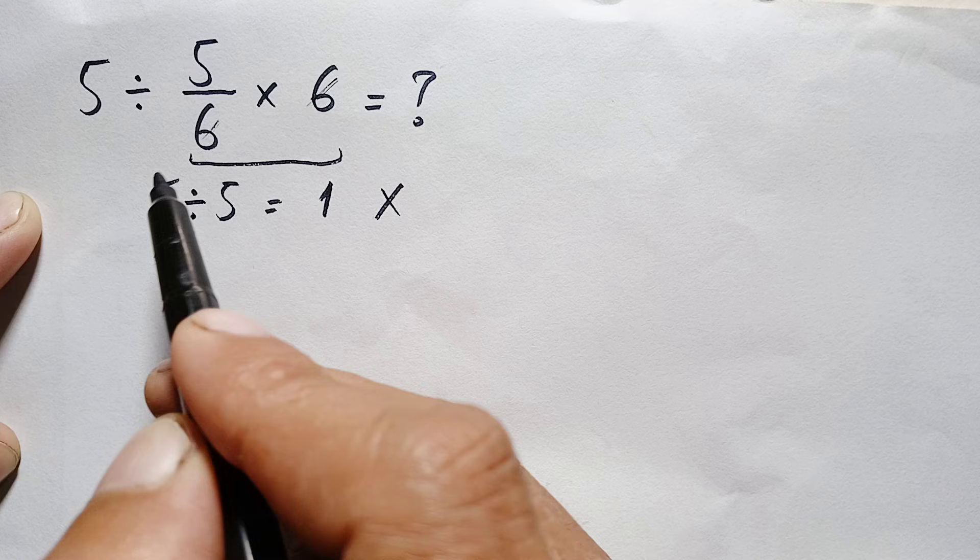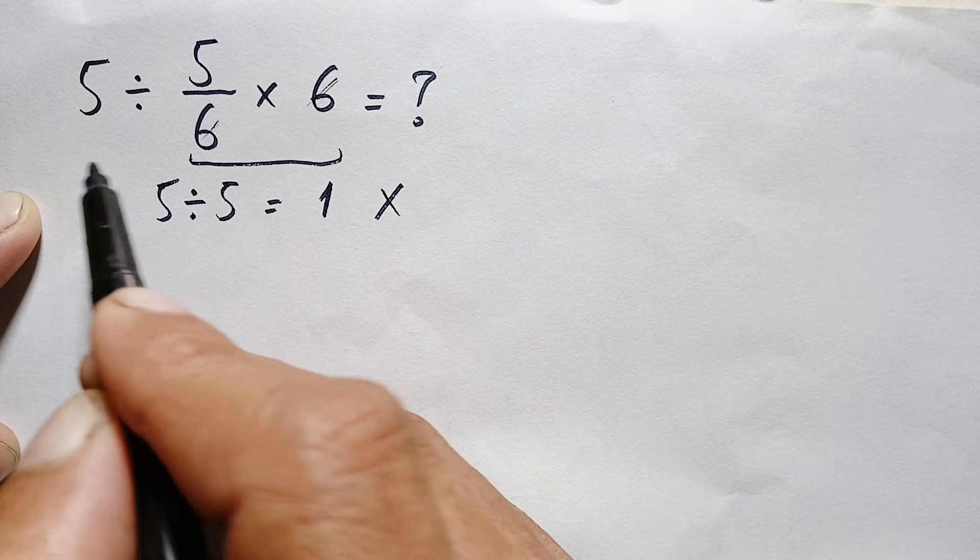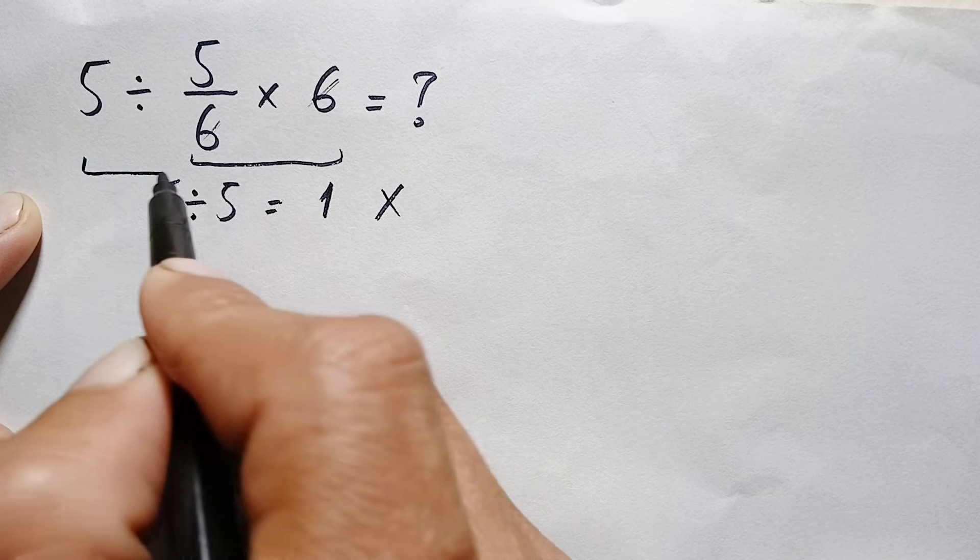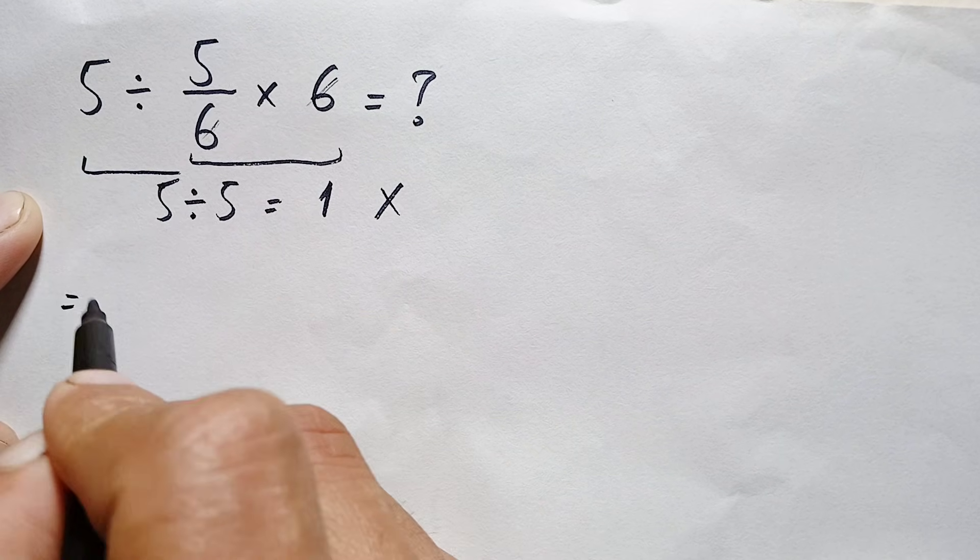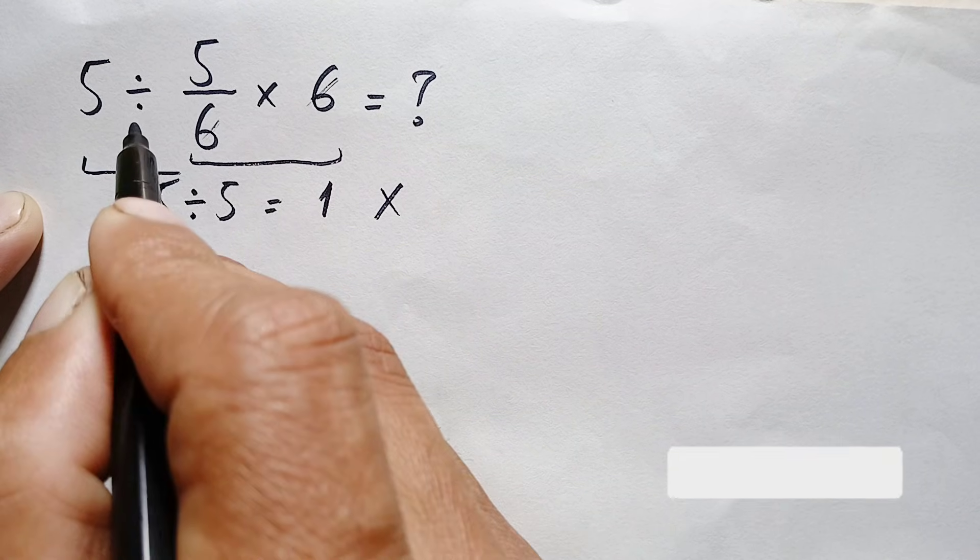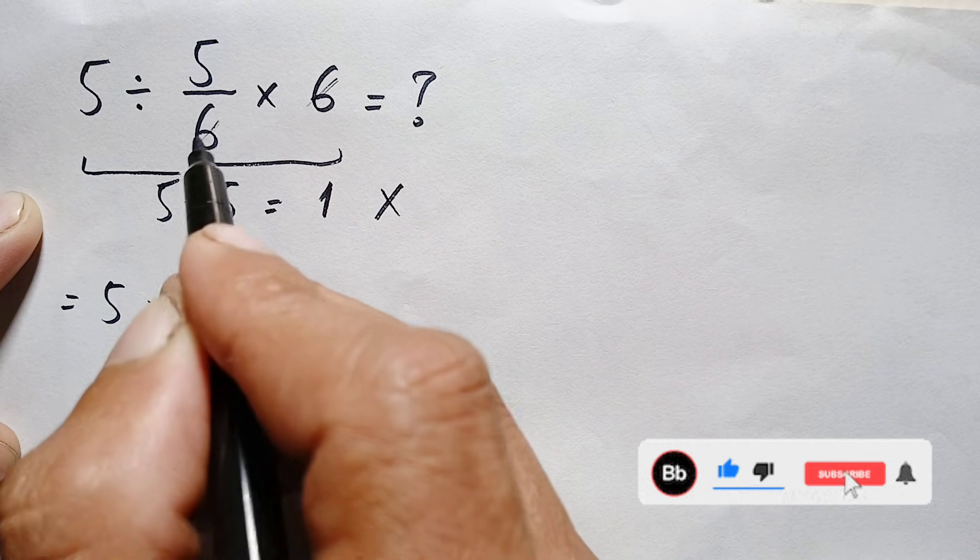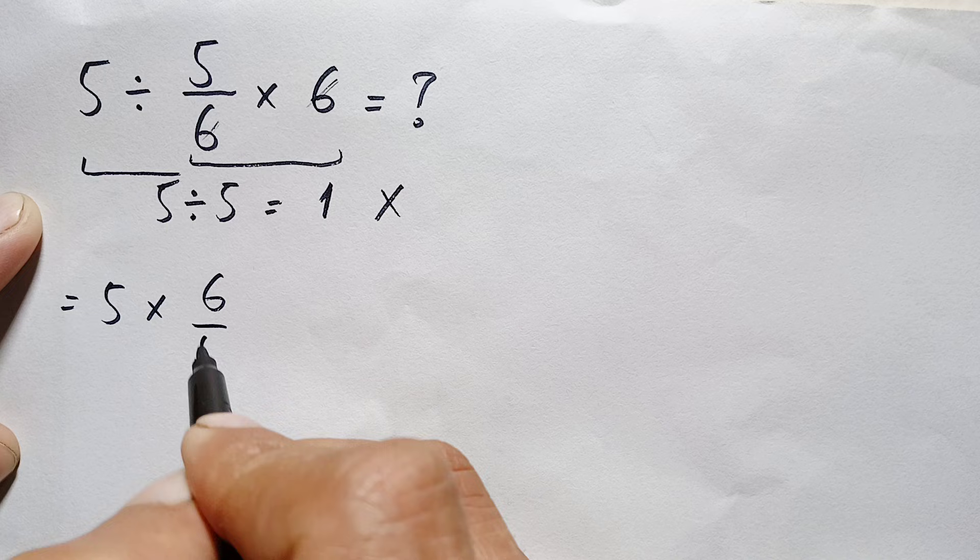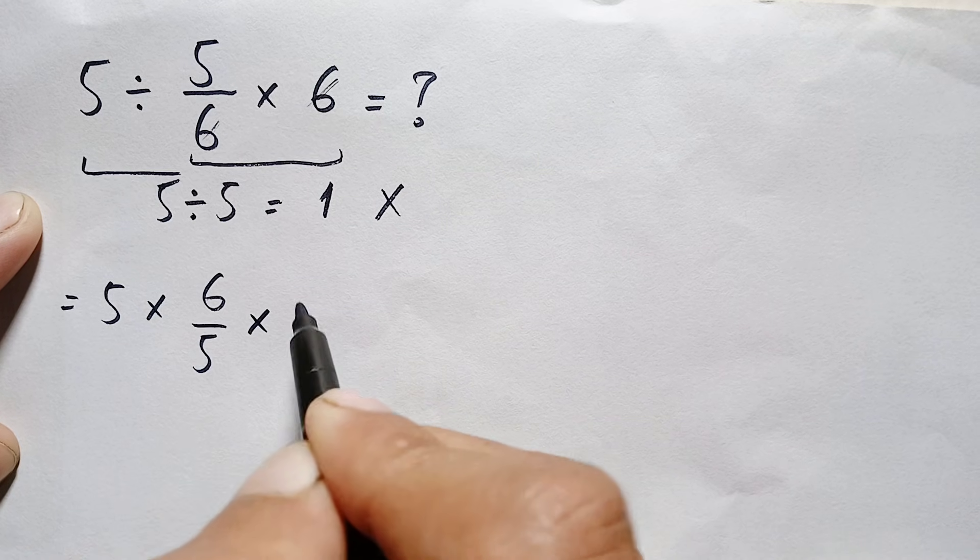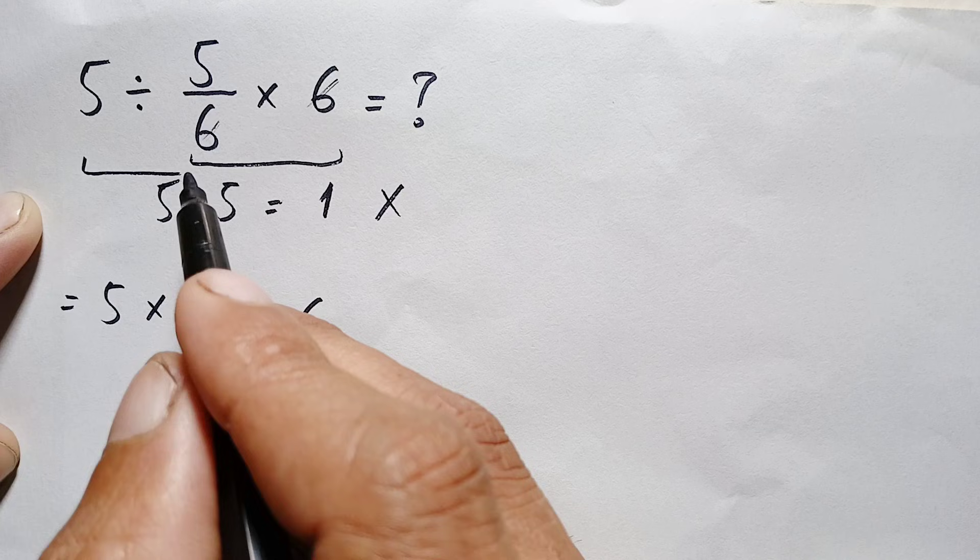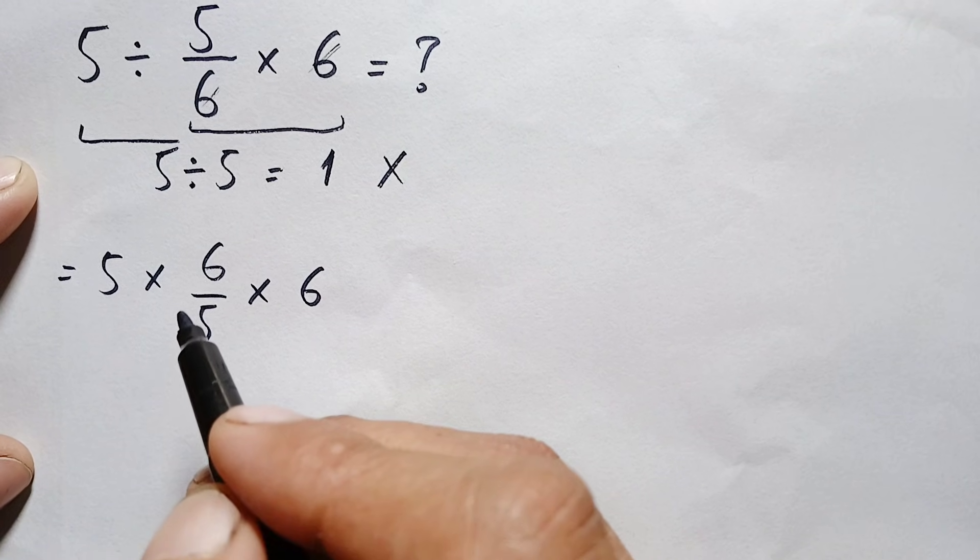So here we will do the division first. We will divide 5 by 5/6. This will become: we leave the first number the same, change the division sign to multiplication, and take the reciprocal of this fraction. So this becomes 5 times 6/5 times 6. We do this to divide by a fraction using the KCF rule.